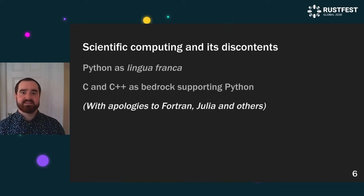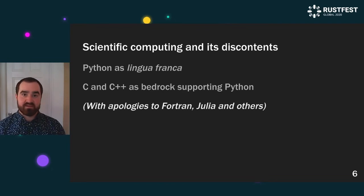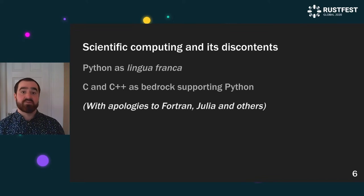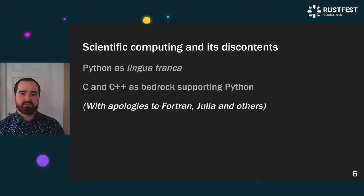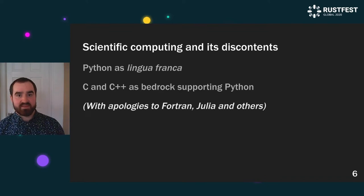Moving on to the existing scientific landscape, we have Python as sort of the lingua franca — the language that everybody speaks. This is a very good thing because a lot of new programmers' first language today is Python, and it's important that they're able to write software in a language they're comfortable with. But Python is actually usually quite slow, so when people need performance, they start to reach for languages like C and C++, which are the bedrock systems programming languages that support Python. Languages like Fortran and Julia are also very important and definitely have their place.